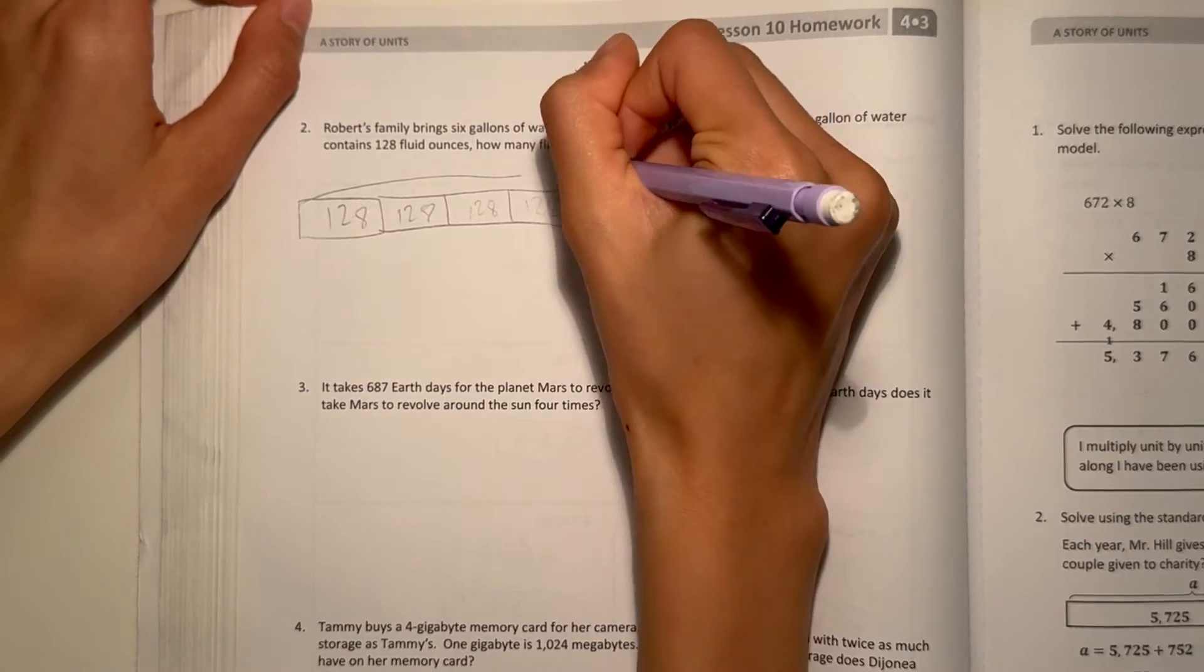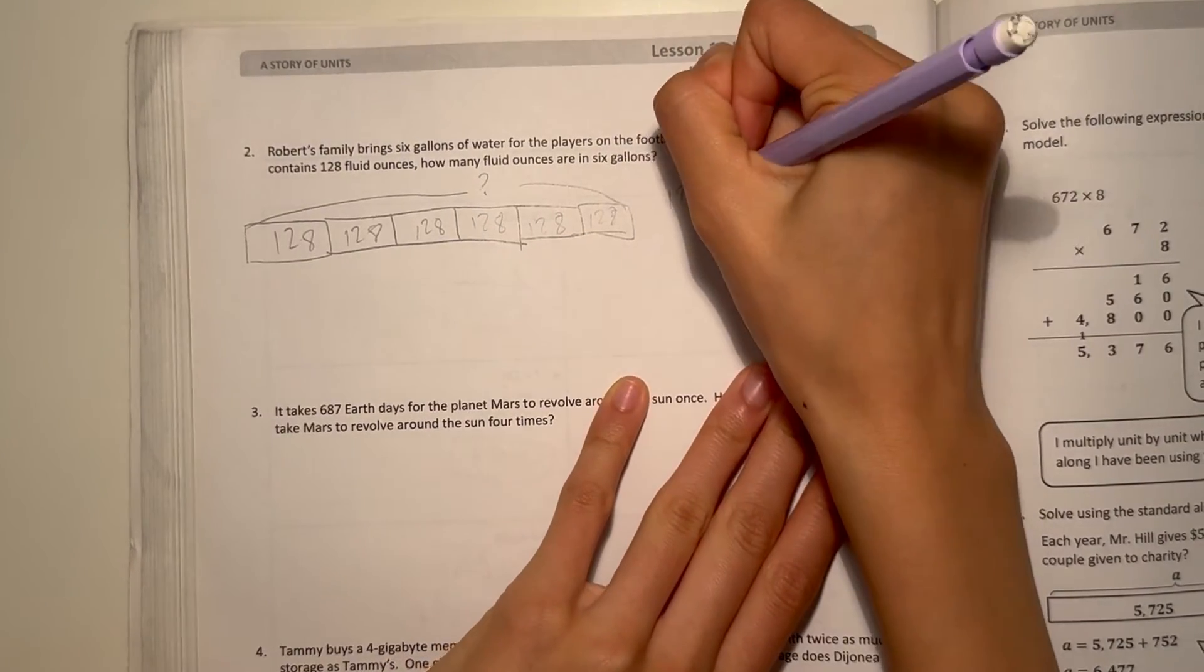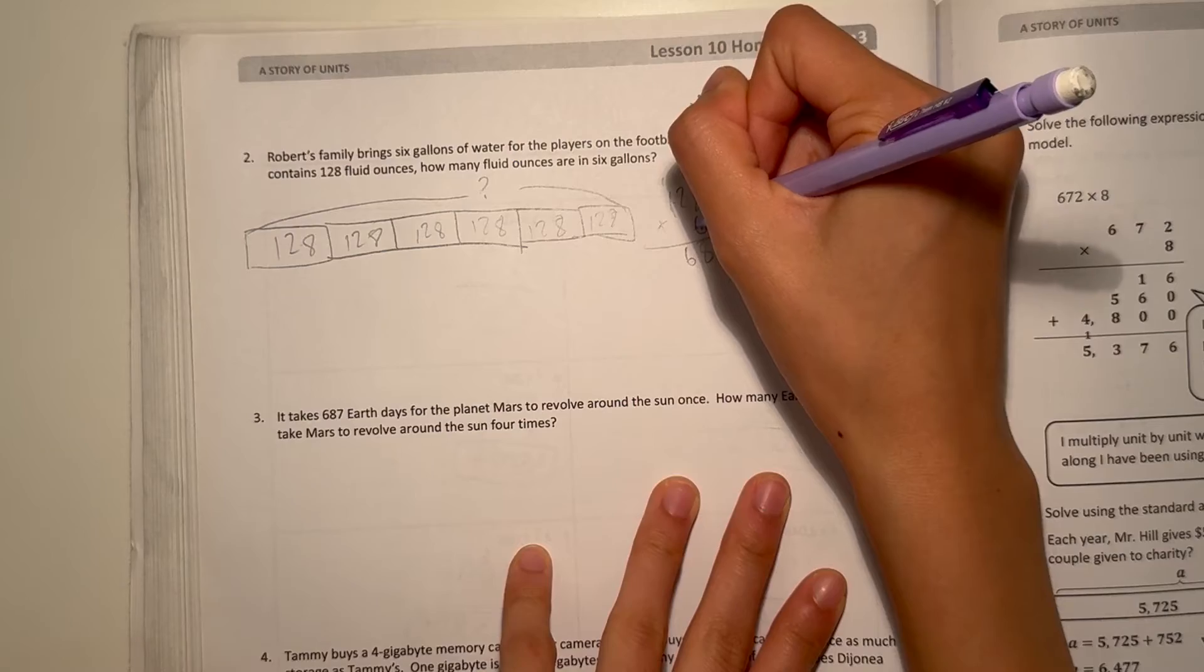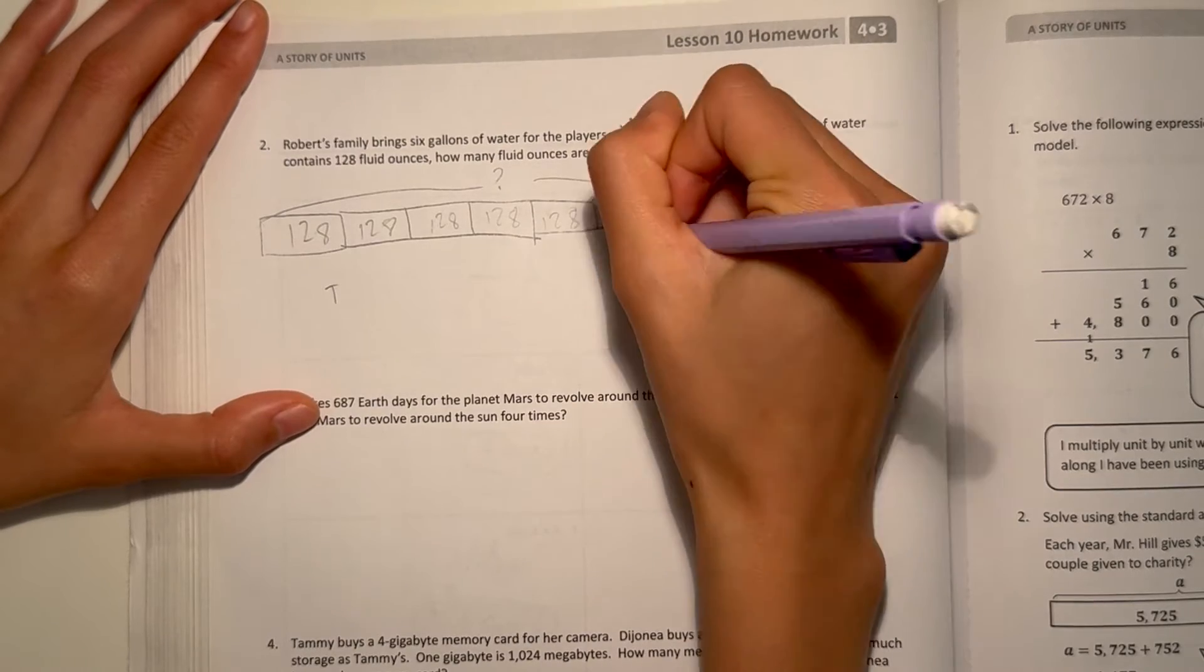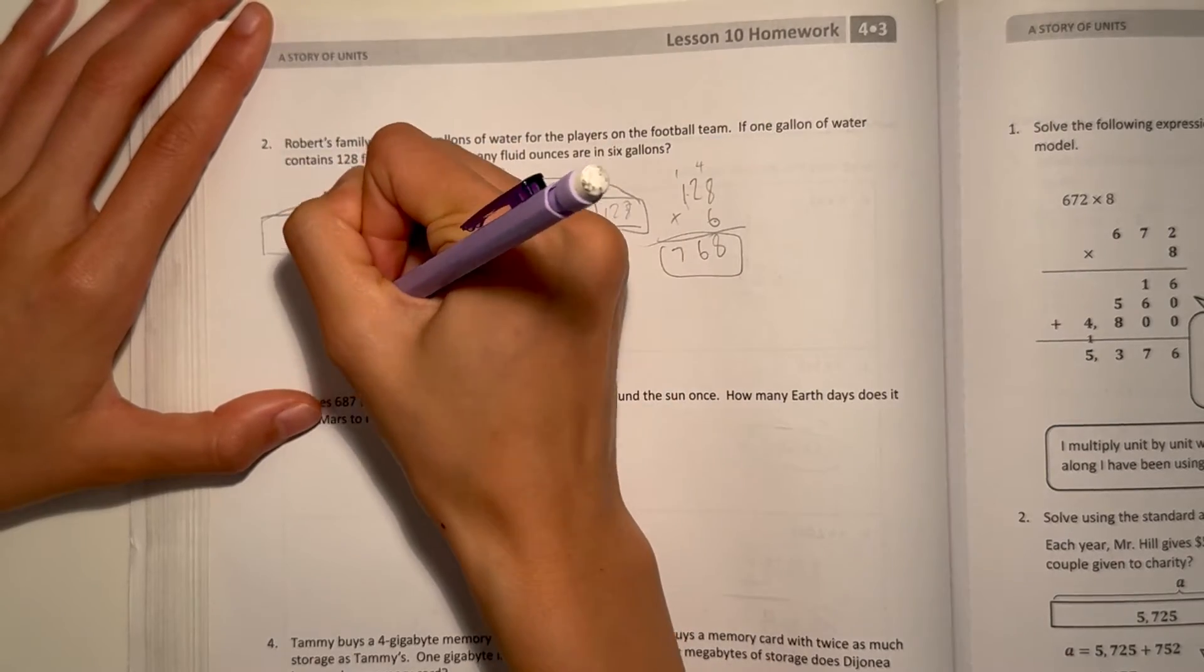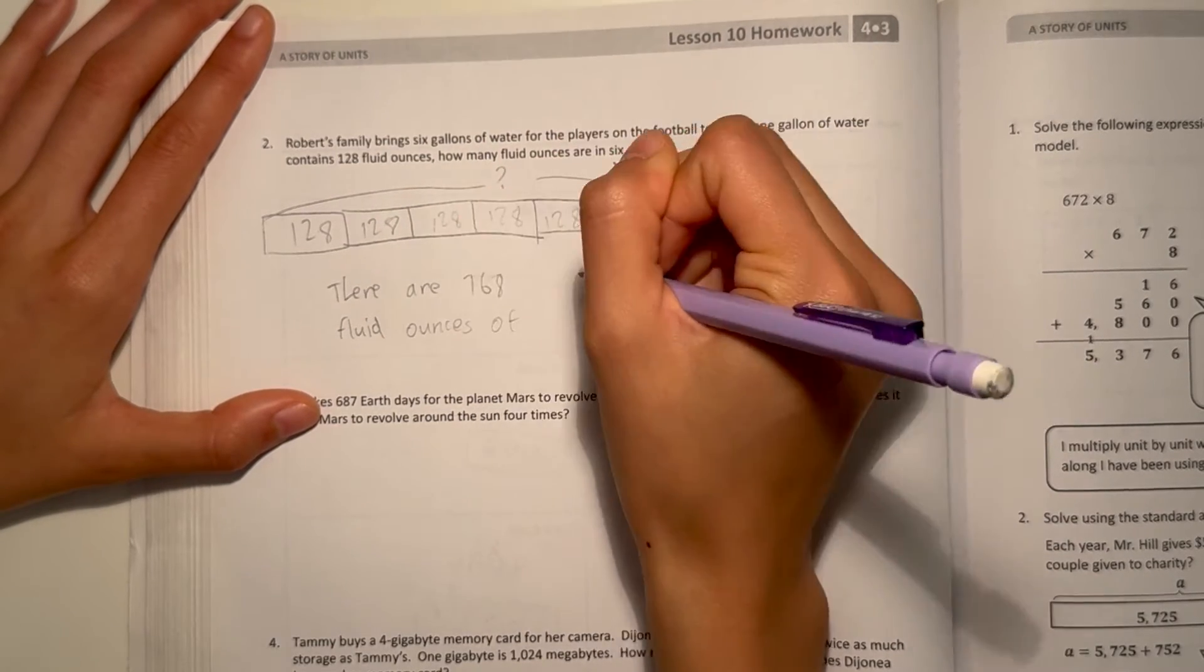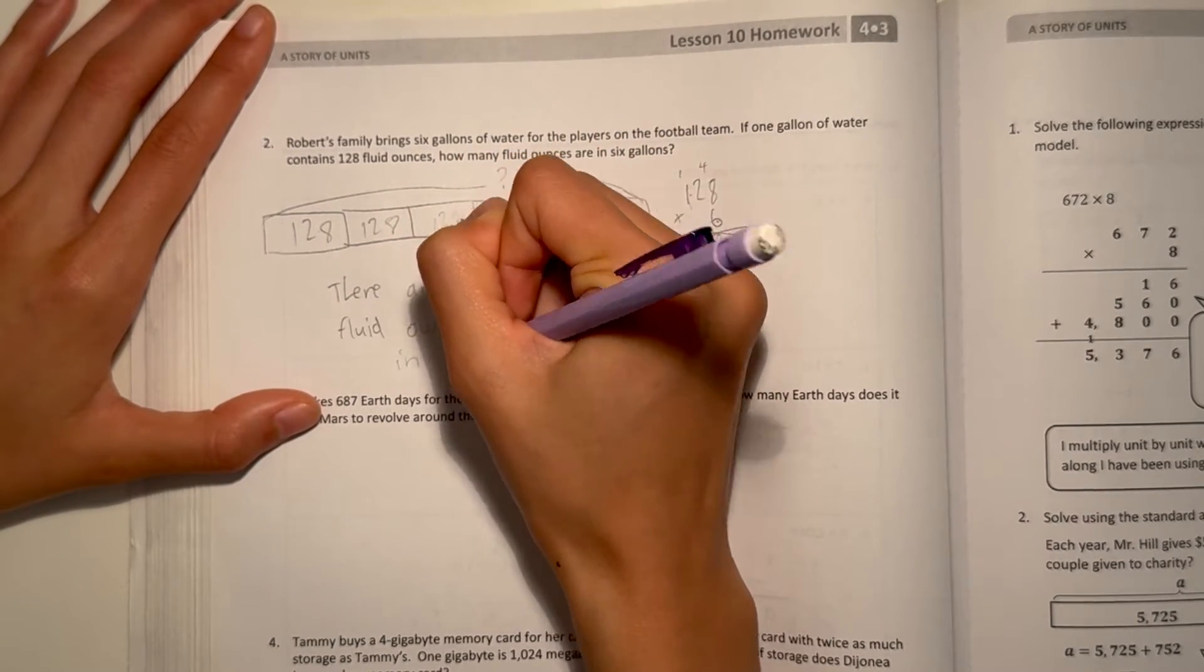And each one of these are 128 fluid ounces. So we want to find out what is the total. Well, it's 6 gallons. So 128 times 6. 8 times 6 is 48. 2 times 6 is 12, plus 4 is 16. And 1 times 6 is 6, plus 1 is 7. 768. So that means there are 768 fluid ounces of water in 6 gallons.